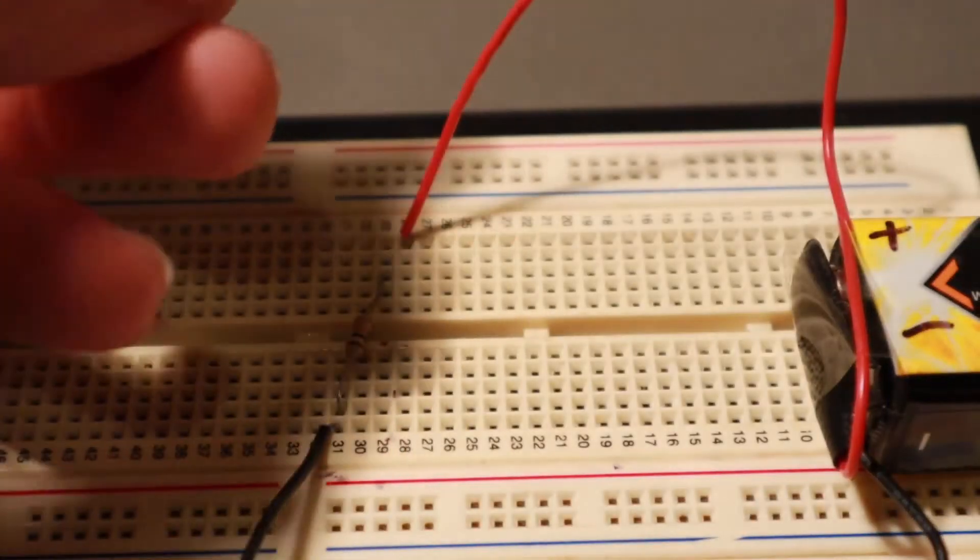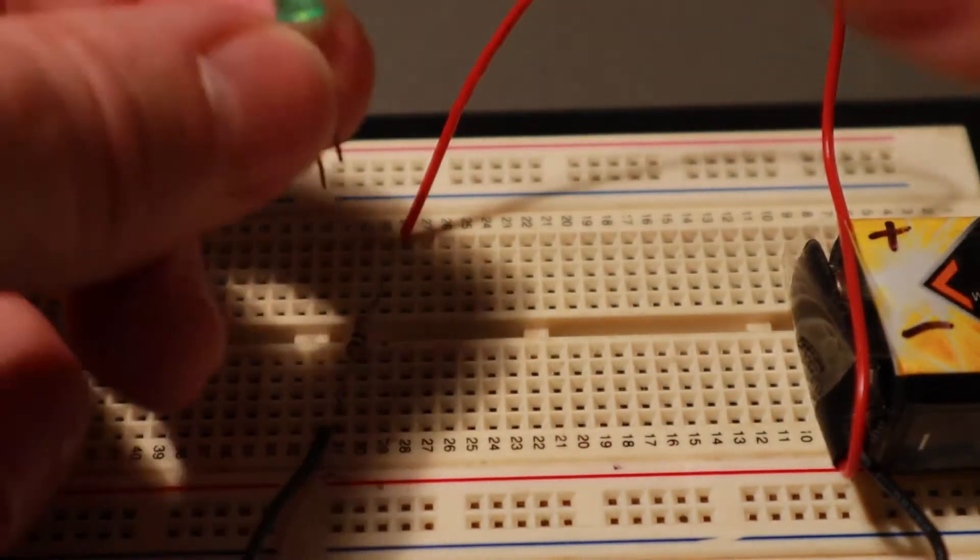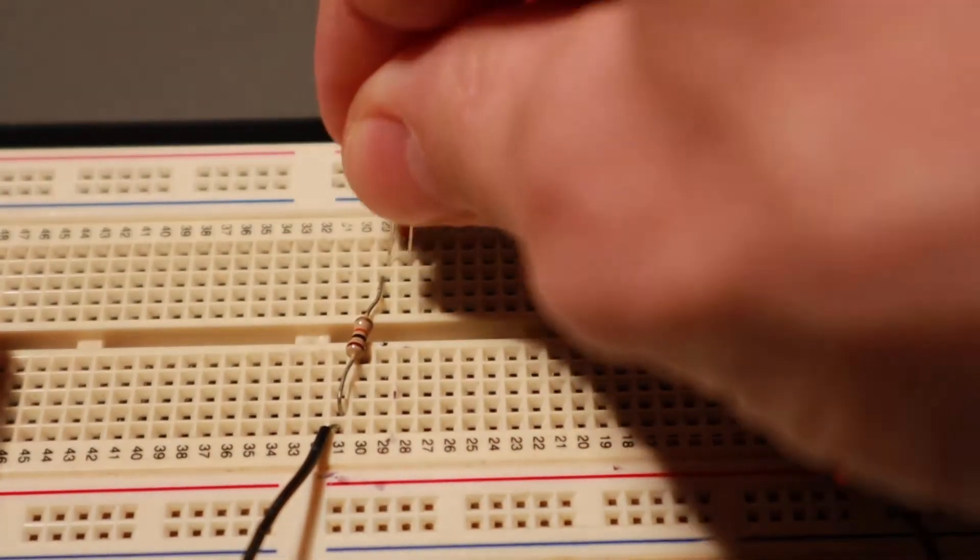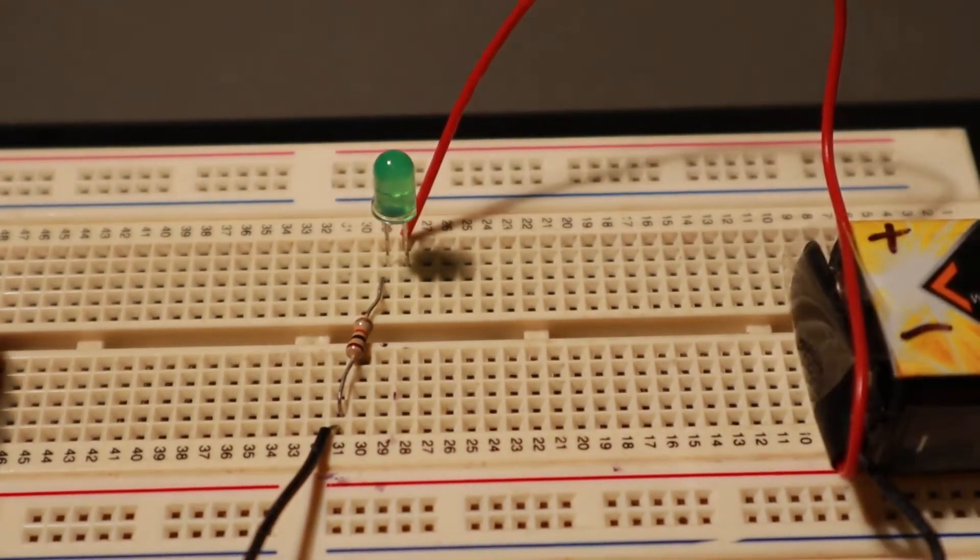Let's have a look at that in a circuit. Just a simple circuit here with a resistor and a battery. If we put that there like that, now you can see that does not light up.